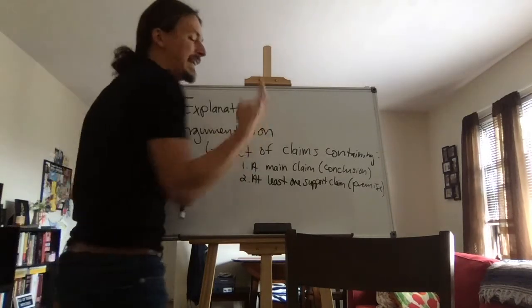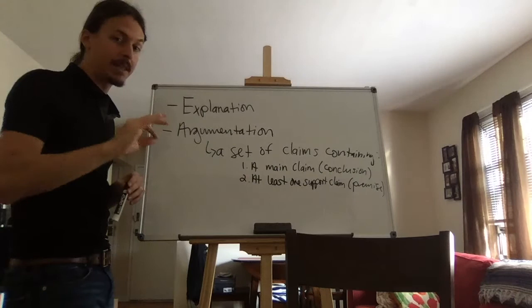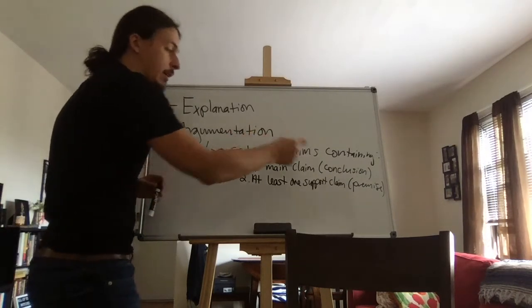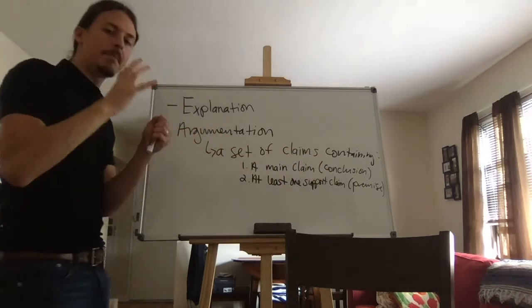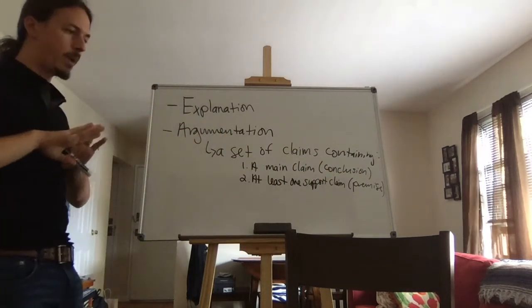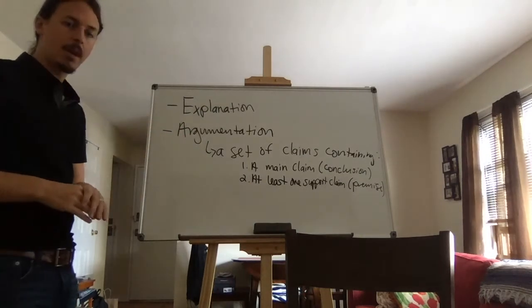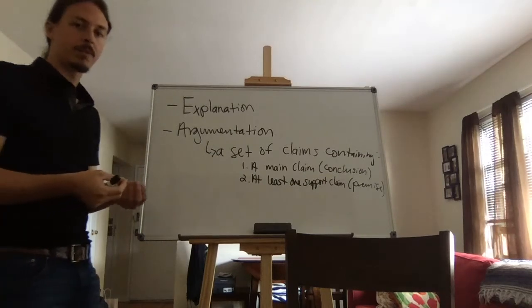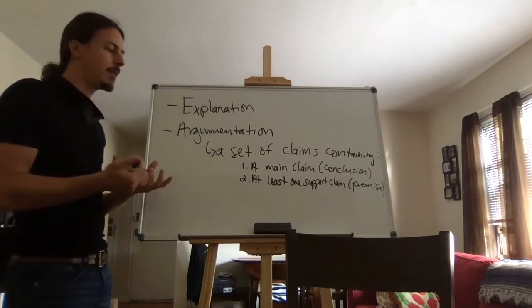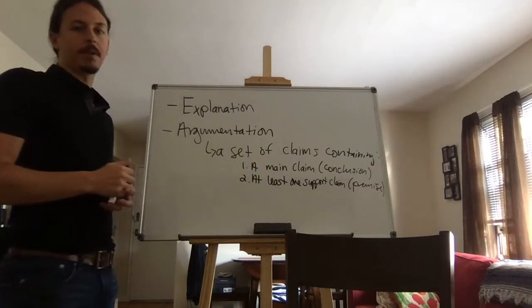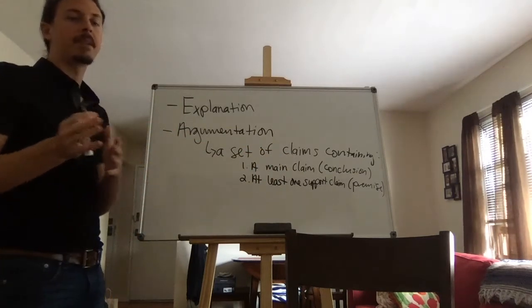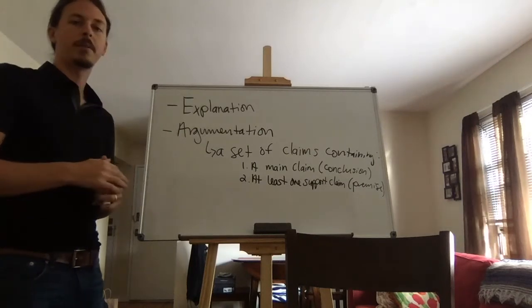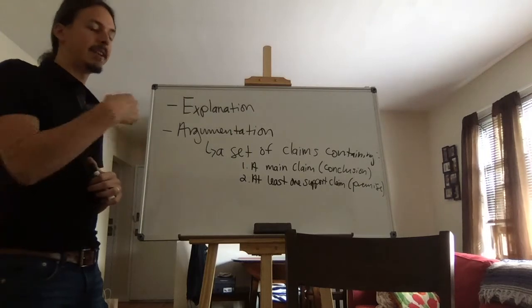So an argument needs at least two claims, at the very least. Just one claim, not an argument. You need your conclusion. And the conclusion is the main claim towards which everything else in the argument points. However, you need to give evidence for your conclusion. One claim by itself isn't an argument, you need to give support. And that's where the premises come in. So for example, if I were to tell you, it's sunny outside right now, that's not an argument. It's just a claim.